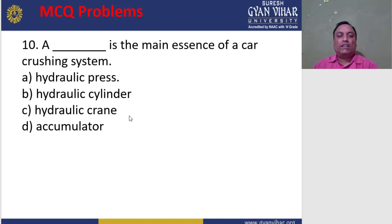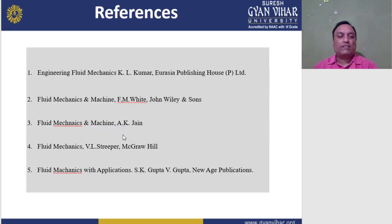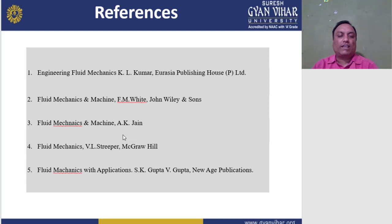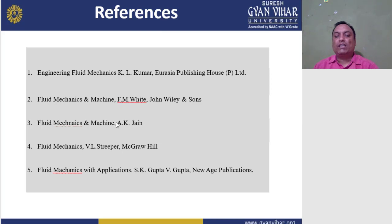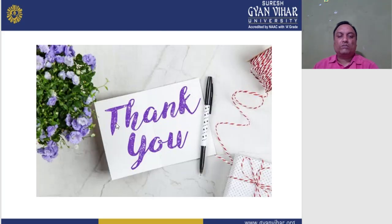Question 10: What is the main essence of a car pressing system — a) hydraulic press, b) hydraulic cylinder, c) hydraulic crane, d) equator? The correct answer is hydraulic press. These are the references for this chapter: KL Kumar's Engineering Fluid Mechanics, FM Wyde's Fluid Mechanics and Machines, AK Jain's Fluid Mechanics and Machines, VL Streeter's Fluid Mechanics, and SQ Gupta and V Gupta's Fluid Mechanics and Applications published by New Age Publications. Thank you for attending this lecture.